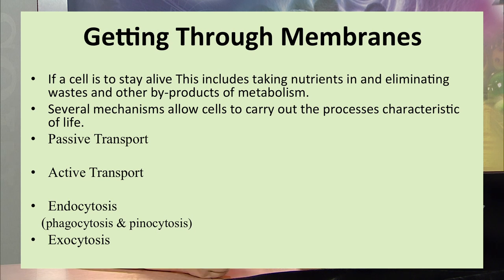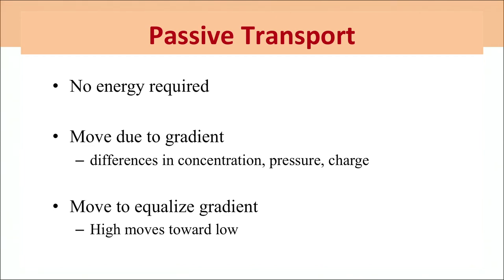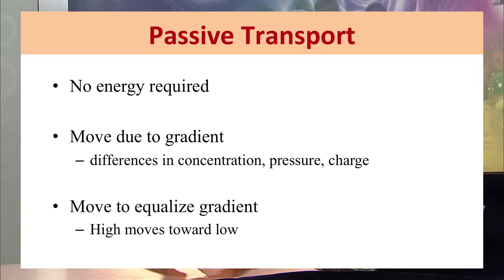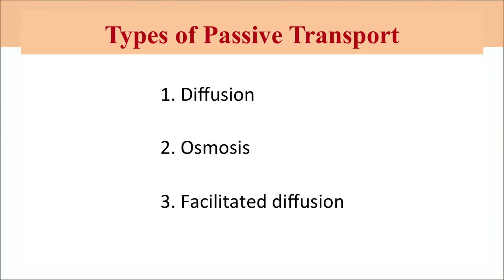First, we will discuss passive transport. Passive transport is the process where no energy is required and molecules move according to a gradient — that is, according to differences in concentration, pressure, or charge. Molecules move to equalize the gradient, moving toward lower concentration until the concentration becomes equal throughout the solution. Passive transport is basically of three types: diffusion, osmosis, and facilitated diffusion.